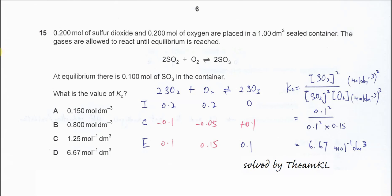Question 15. 0.2 mol of SO2 and 0.2 mol of oxygen are placed in 1 dm³ sealed container and the gases are allowed to reach equilibrium. The equation is given: 2SO2 plus O2 forms 2SO3. At equilibrium there is 0.1 mol of SO3 in the container.